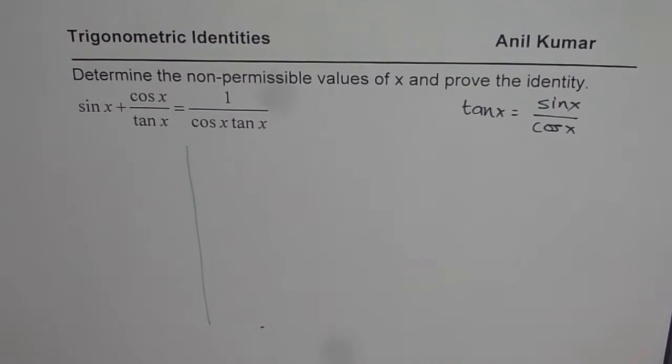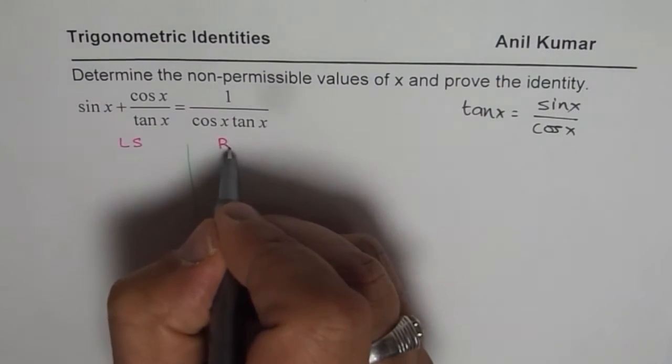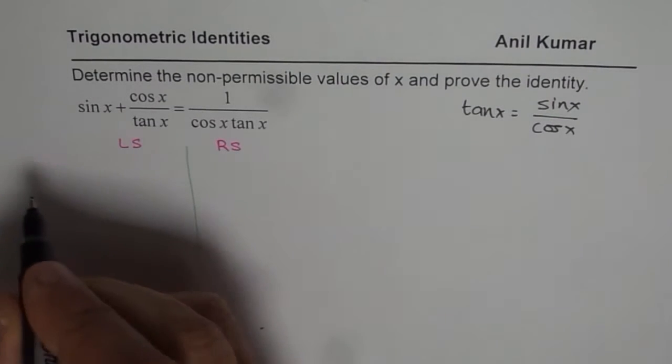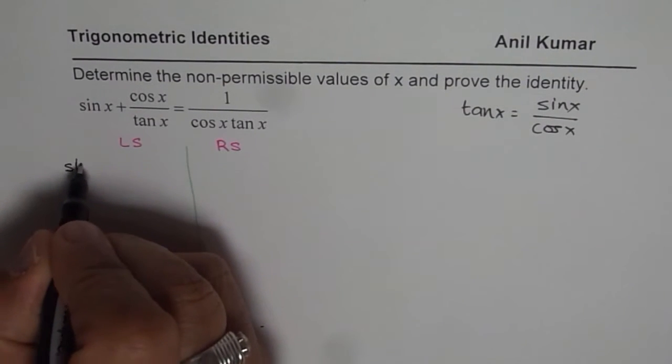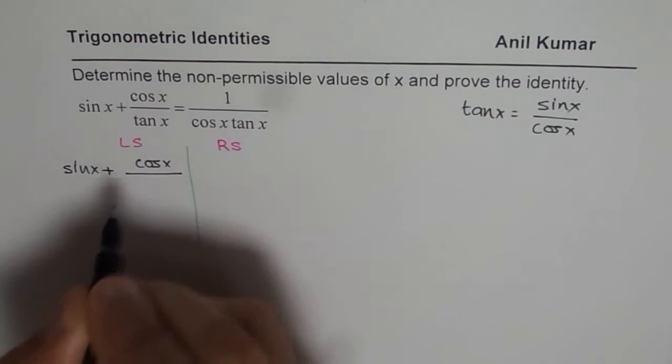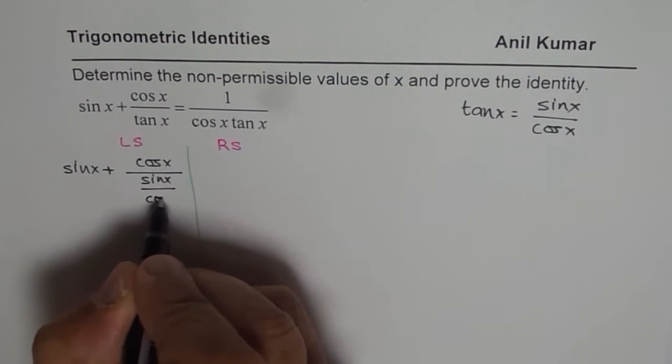So let's rewrite this left side. We will write left side and then right side and see how they can be simplified. On the left side, we have sin x plus cos x over tan x, which could be written as sin x over cos x.